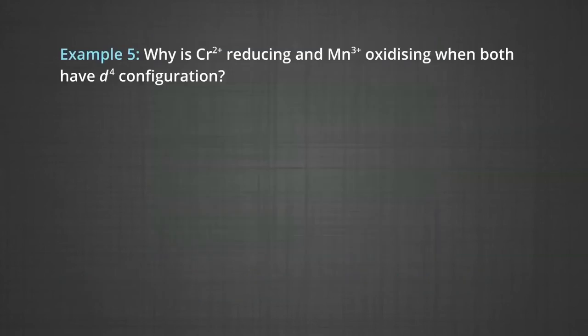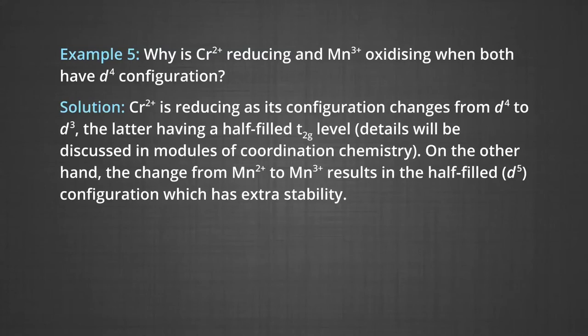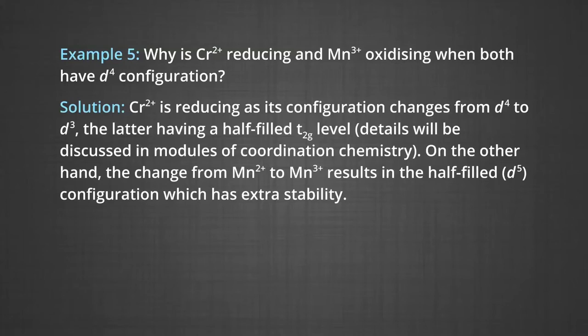Why is Cr2+ reducing and Mn3+ oxidizing when both have D4 configuration? The answer is that Cr2+ is reducing as its configuration changes from D4 to D3. On the other hand, the change from Mn2+ to Mn3+ results in the half-filled D5 configuration, which has extra stability.